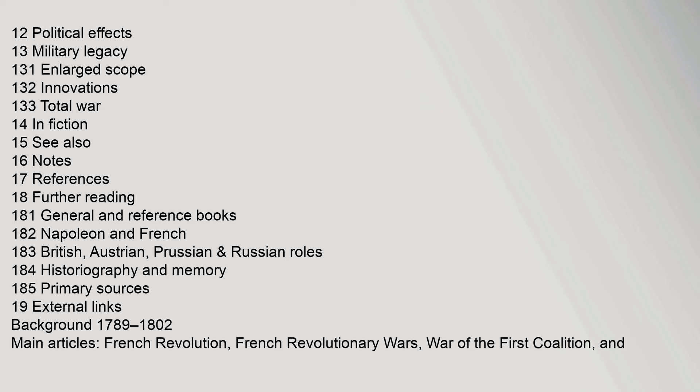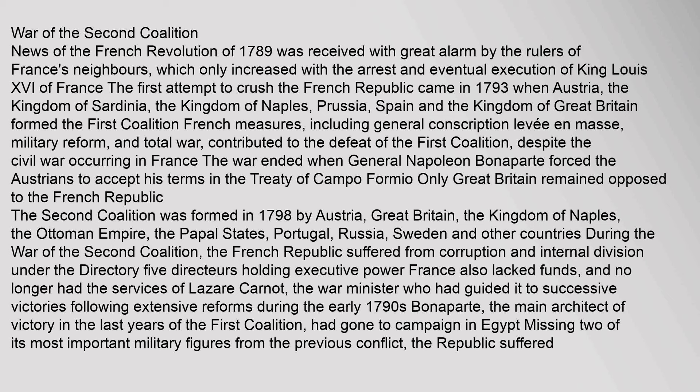News of the French Revolution of 1789 was received with great alarm by the rulers of France's neighbours, which only increased with the arrest and eventual execution of King Louis XVI of France. The first attempt to crush the French Republic came in 1793 when Austria, the Kingdom of Sardinia, the Kingdom of Naples, Prussia, Spain, and the Kingdom of Great Britain formed the first coalition. French measures, including general conscription, the levée en masse, military reform, and total war, contributed to the defeat of the first coalition, despite the civil war occurring in France.